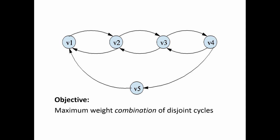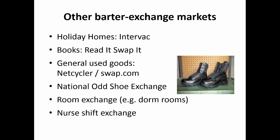This isn't just for kidney exchange — it also applies in barter markets where you switch things for things. There are barter markets for holiday homes, books, general used goods, and even odd shoes. If you're a leg amputee or have feet of different sizes, you can halve your shoe-buying costs. There are also room exchanges like dorm rooms and nurse shifts.